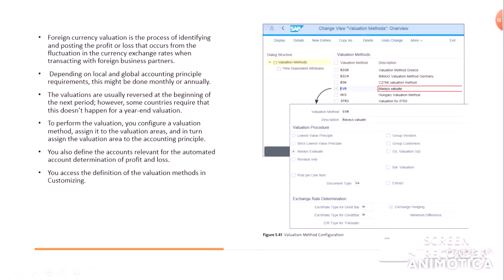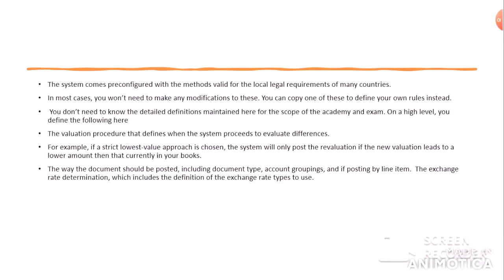This is the important part — the valuation procedure. Depending on what the valuation procedure will be, it is like lowest value principle, strict lowest value principle, always evaluate, or revalue only. The system comes pre-configured with methods valid for the local legal requirements of many countries. In most cases you won't need to make any modifications; you can copy one of these to define your own rules instead.